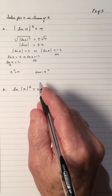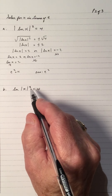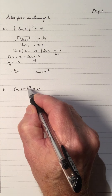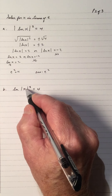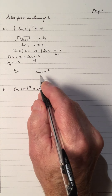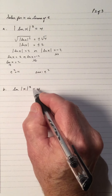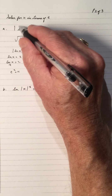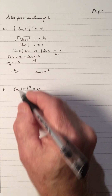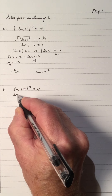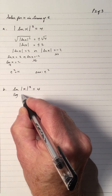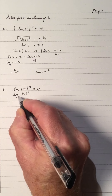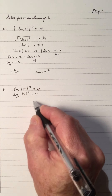Now I have another equation, almost identical, but I have the square on the absolute value of x: ln|x²| equals four. This is done differently — this is the log of the absolute value of x squared, base e equals four.